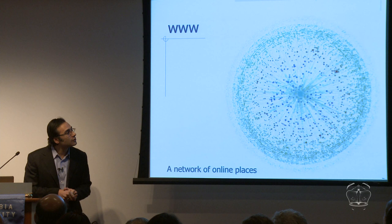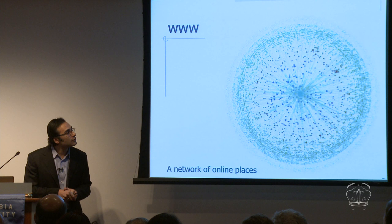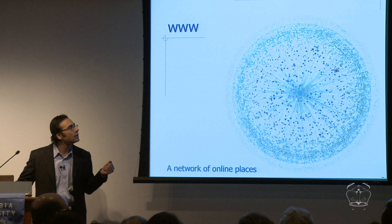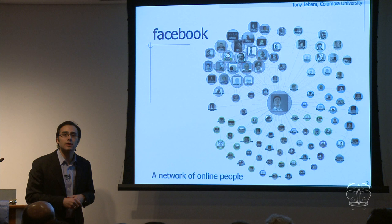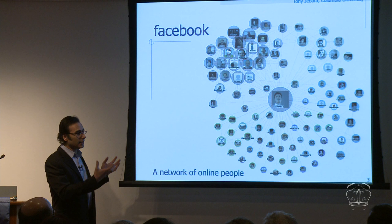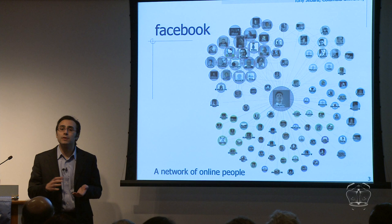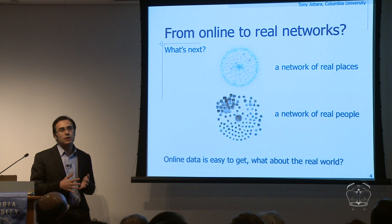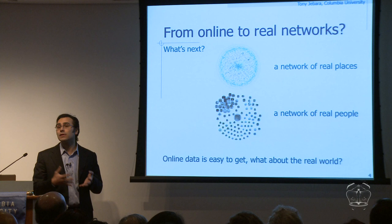That networks analogy was very powerful. We've also recently seen, in the past four years or so, another network — a network of people online — the Facebook network, the MySpace network, and so on. Both phenomena have been wonderful because they allowed us to explore the concept of a network online in terms of a network of places and a network of people. So what I'm here to talk about is how do we move these networks of places and people out of the online world and into the real world?